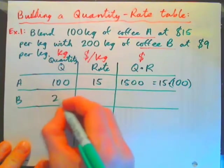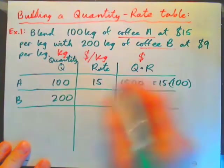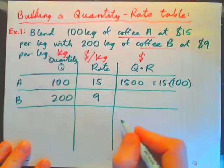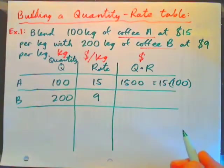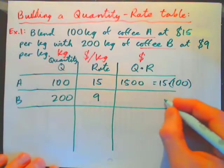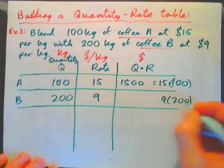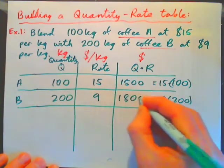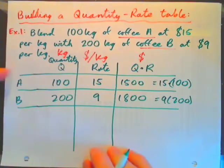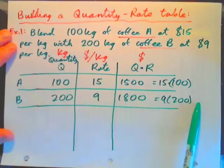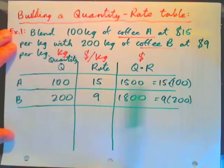Now, 200 kilograms of coffee B, the rate is $9 per kilogram. How much money would that cost? Well, you do this quantity times rate, that's 9 times 200, and we get $1,800. So the first two rows should be easy enough to understand what all these numbers mean.